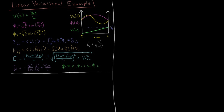We're going to have a trial function which is a linear combination of two basis functions, so we have two variational parameters, C1 and C2. Our energy is going to be a minimum with respect to the value of those parameters. The natural choice for these two basis functions are the first two eigenfunctions of the particle in a box, phi1 and phi2. Now these are not exact eigenfunctions of our Hamiltonian here, but they are going to be a pretty good approximation to the ground state energy.